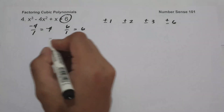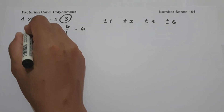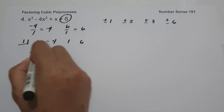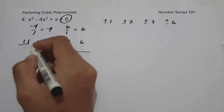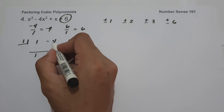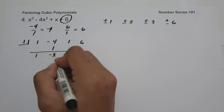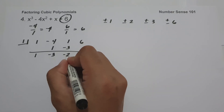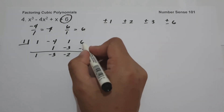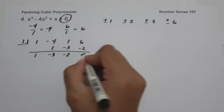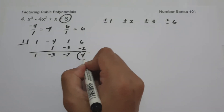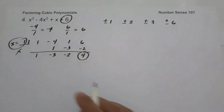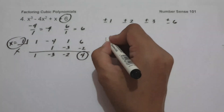Let us check if positive 1 is a solution. The coefficients of x cubed are 1, negative 4, 1, and 6. Bring down 1. 1 times 1 is 1. Negative 4 plus 1 is negative 3. Negative 3 times 1 is negative 3. 1 plus negative 3 is negative 2. Negative 2 times 1 is negative 2. 6 plus negative 2 is 4. Since the remainder is not 0, x equals 1 is not included in our solution.